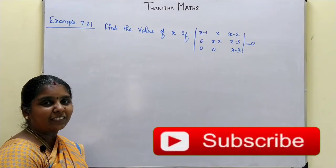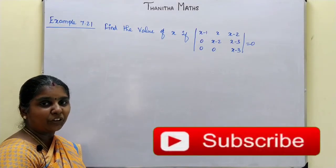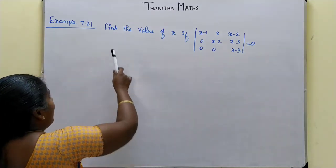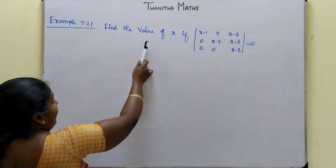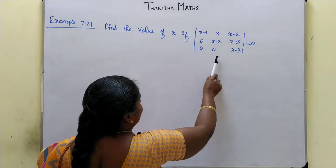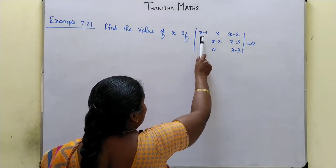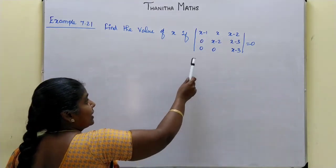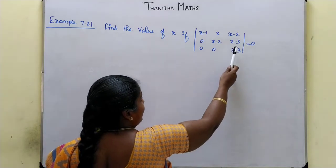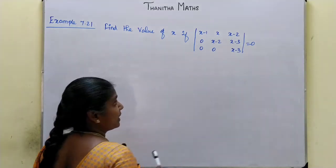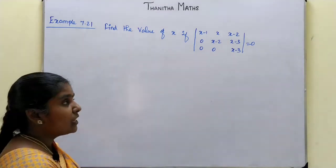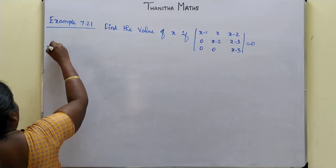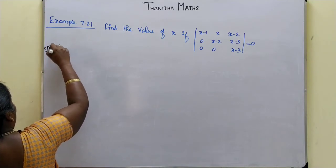My students, now we are going to talk about example 7.21. Find the value of x if the determinant of the matrix with entries x-1, x, x-2 in the first row; 0, x-2, x-3 in the second row; and 0, 0, x-3 in the third row is equal to 0.